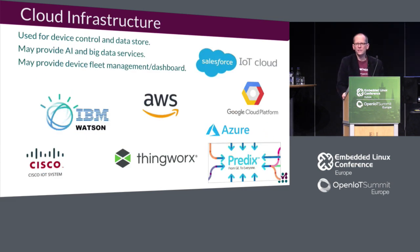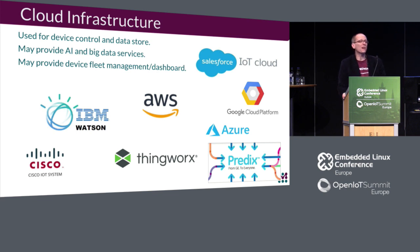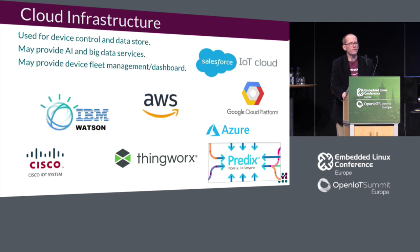Cloud infrastructure is increasingly important in the Internet of Things. There's no end of providers. At a minimum they're used for device control and data storage. Depending on your workflow, the cloud infrastructure may provide AI and big data services in addition to data aggregation. Some also have overall fleet management device dashboards where your operations team can see a view of your entire device fleet, make changes, trigger updates, turn devices on and off.